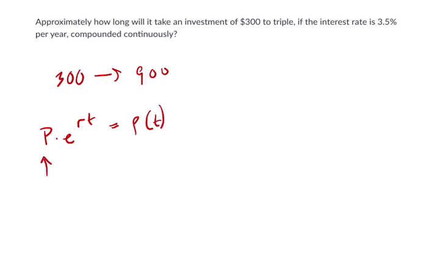Why? This first P is the principal we start with. E is the base for continuously compounding something. R is the rate as a decimal. And T is the amount of time it'll take to get our end result, which is 900, P of T.